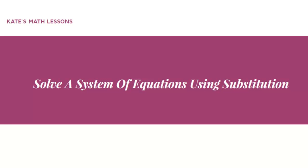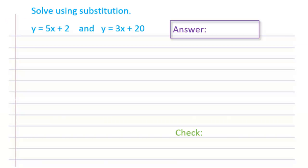In this video, we're going to look at how to solve a system of equations using the substitution method. Here we've been given a system of equations — two linear equations: y equals 5x plus 2, and y equals 3x plus 20. If we were to graph these two, they would both be straight lines and they would cross at some point. The goal when solving a system is to figure out where the lines would cross — the point that works for both equations.